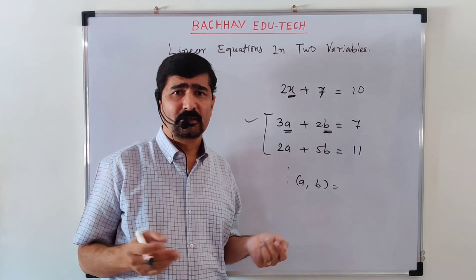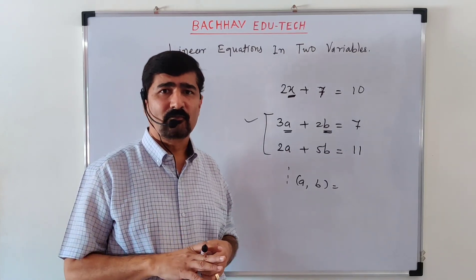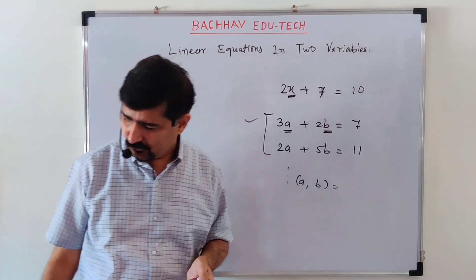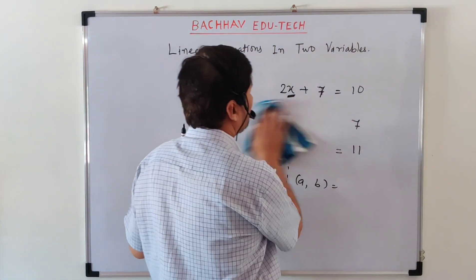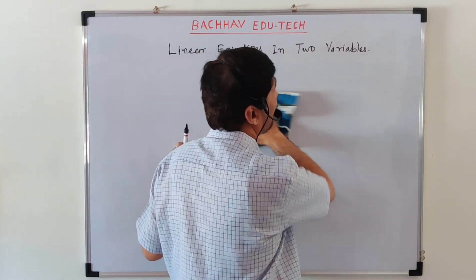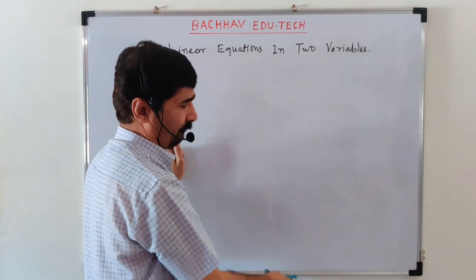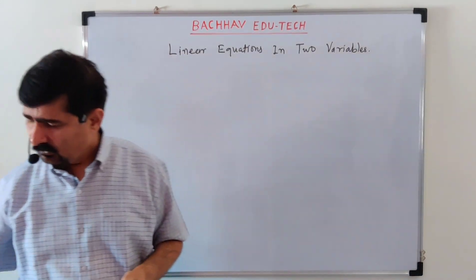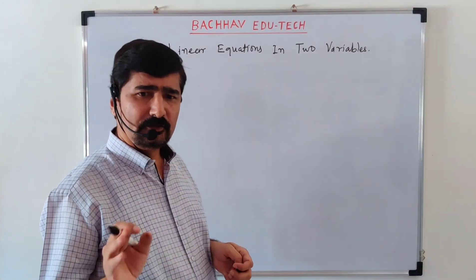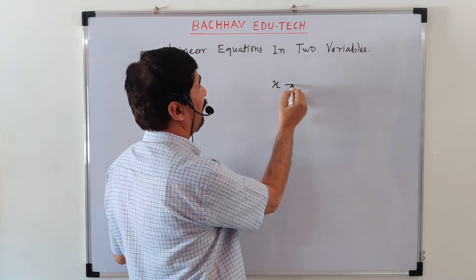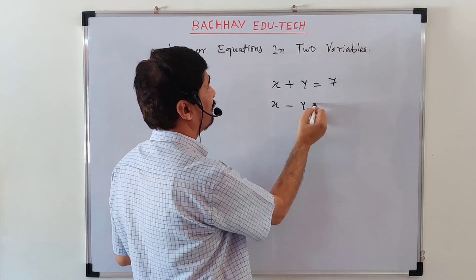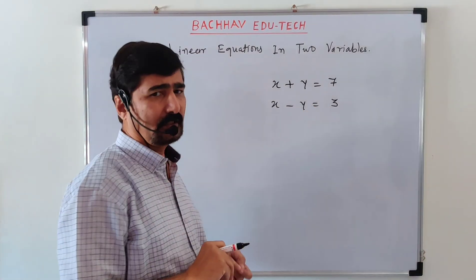अलग-अलग methods हैं simultaneous equations solve करने के। Concept clear करने के लिए कुछ अलग sums consider करते हैं जो book में नहीं हैं। पहला sum: x + y = 7, दूसरा: x - y = 3। इनको solve करना है।